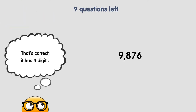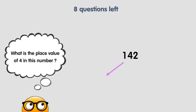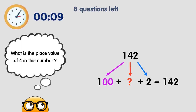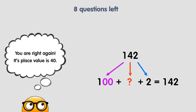That's correct! This number has 4 digits. What is the place value of 4 in this number? You are right again — the 4 has a place value of 40.